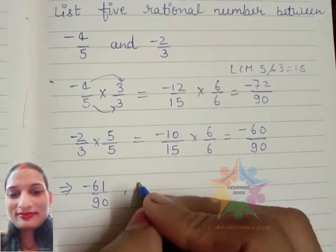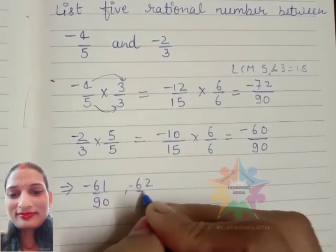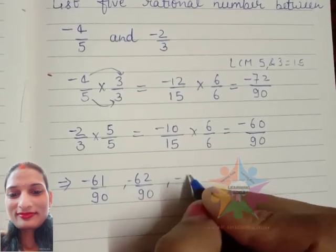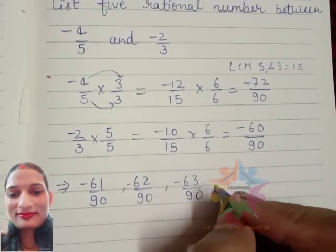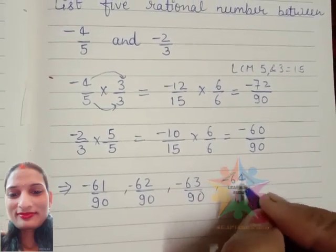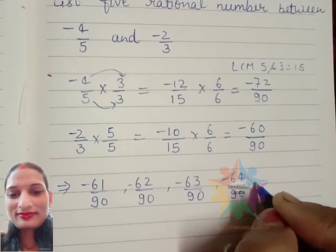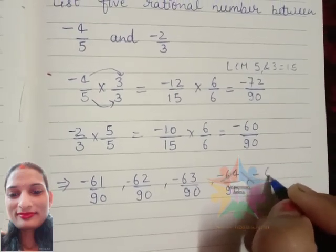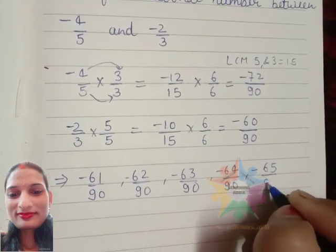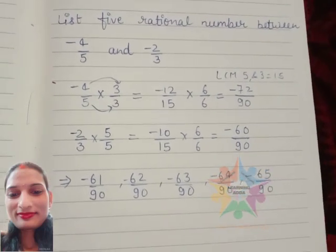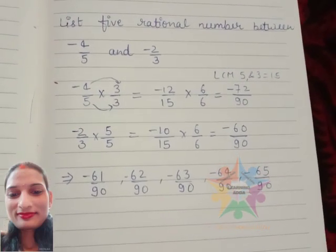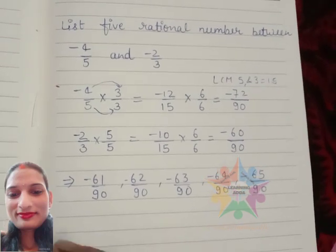Second is -62/90, third one is -63/90, and fourth is -64/90.